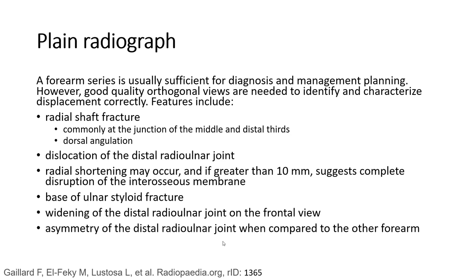A forearm series is usually sufficient for diagnosis and management planning. However, good quality orthogonal views are needed to identify and characterize displacement correctly. Features include: radial shaft fracture, dislocation of the distal radio-ulnar joint, radial shortening — if greater than 10 mm, this suggests complete disruption of the interosseous membrane — fracture of the base of the ulnar styloid, and widening of the distal radio-ulnar joint on the frontal view with asymmetry of the distal radio-ulnar joint when compared to the other forearm.